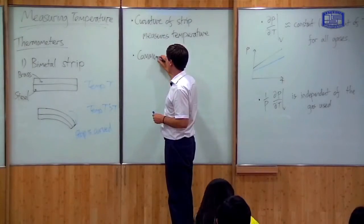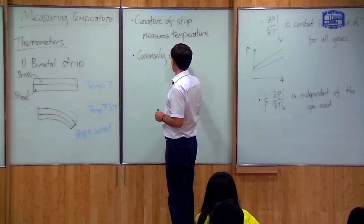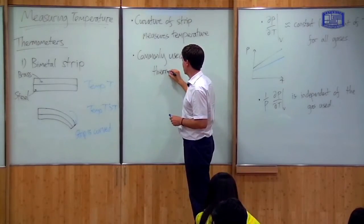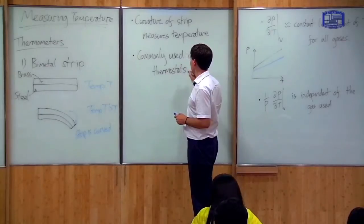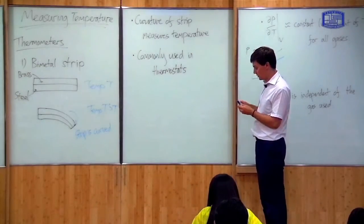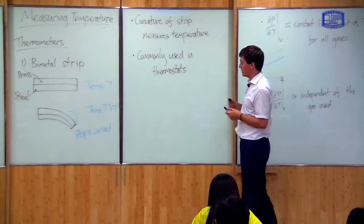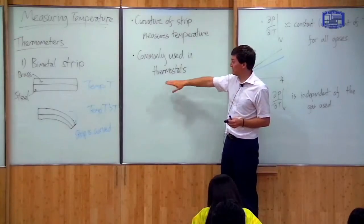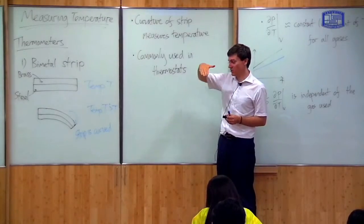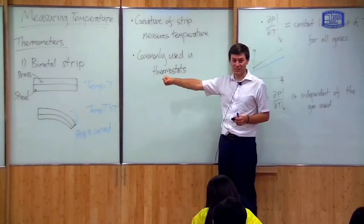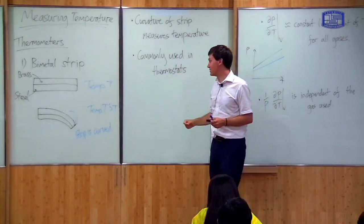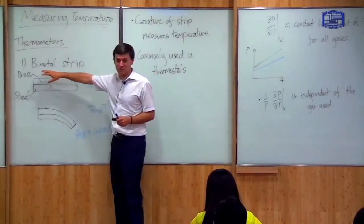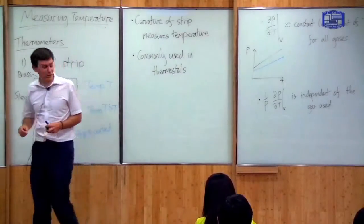The curvature of the strip measures temperature. This is a real device which was in quite common usage until about ten years ago, and it was commonly used in thermostats. A thermostat is the device in a house or office that controls the temperature — so you can set it so that if the temperature goes above 25 degrees the air conditioning comes on. Such devices used to be controlled by these bimetallic strips, although more recently new technologies are more commonly used.